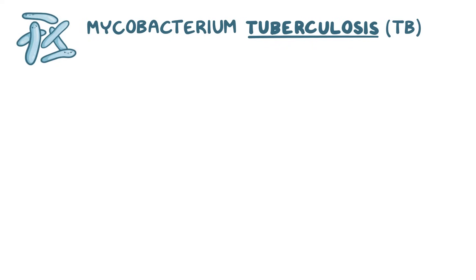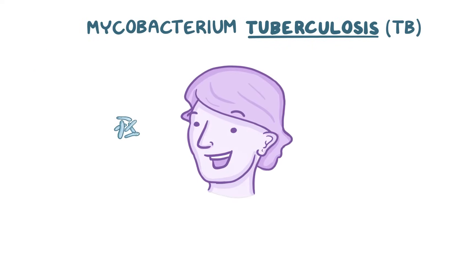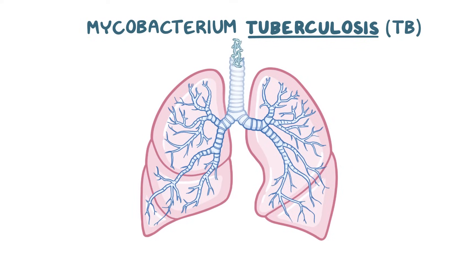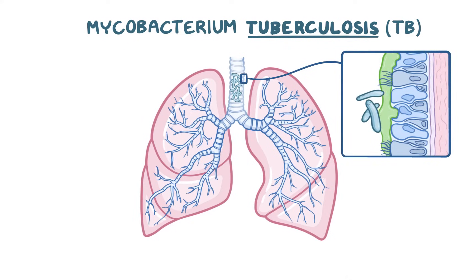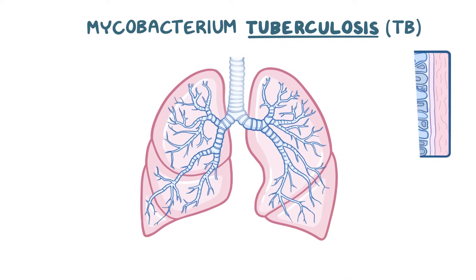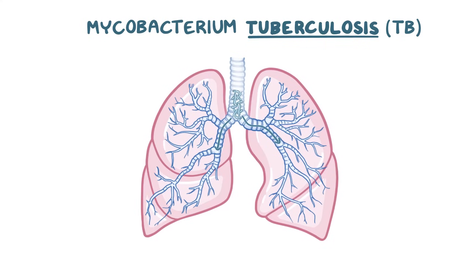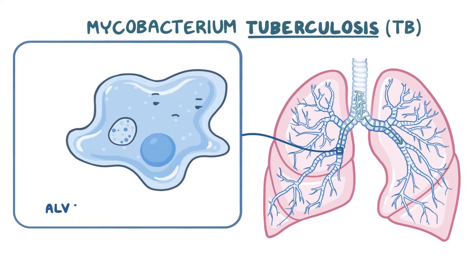Mycobacterium tuberculosis is usually transmitted via inhalation, which is how they gain entry into the lungs. We breathe in all sorts of viruses and bacteria all the time, but we've got defenses that take care of most of them. Air that we breathe in is turbulent in the upper airways and drives most bacteria against mucus, which is then cleared pretty quickly. TB can avoid these mucus traps and make its way to the deep airways and alveoli, where macrophages eat up foreign cells.